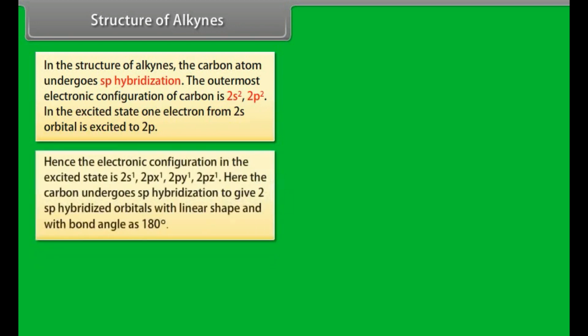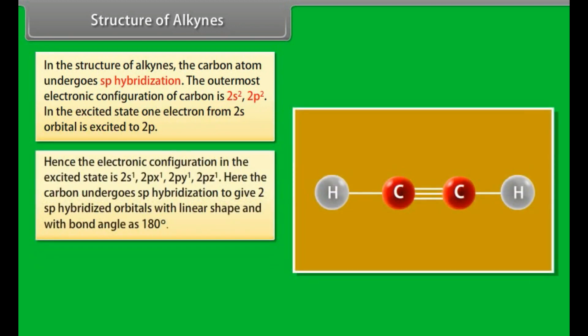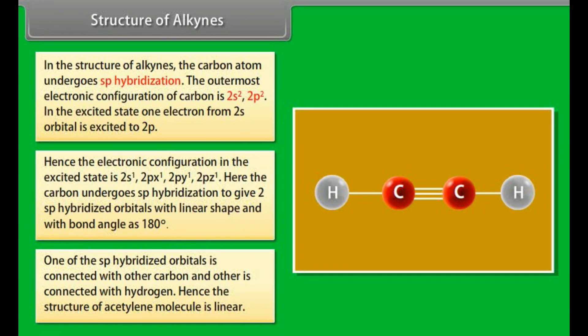Structures of alkynes. In the structure of alkynes, the carbon atom undergoes SP hybridization. The outermost electronic configuration of carbon is 2s2 2p2. In the excited state, one electron from 2s orbital is excited to 2p. Hence the electronic configuration in the excited state is 2s1 2px1 2py1 2pz1. Here the carbon undergoes SP hybridization to give 2 SP hybridized orbitals with linear shape and with bond angle as 180 degrees. One of the SP hybridized orbitals is connected with other carbon and other is connected with hydrogen. Hence the structure of acetylene molecule is linear.